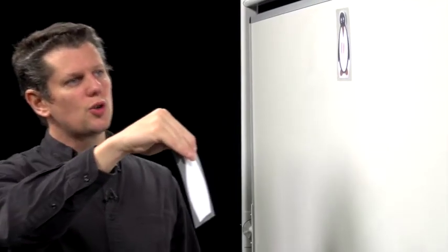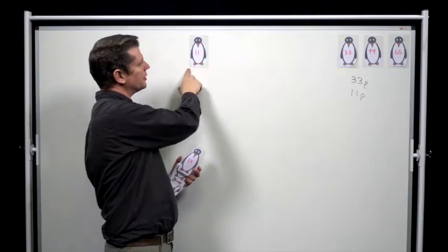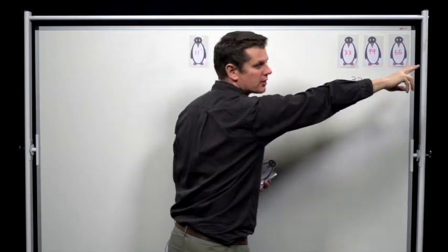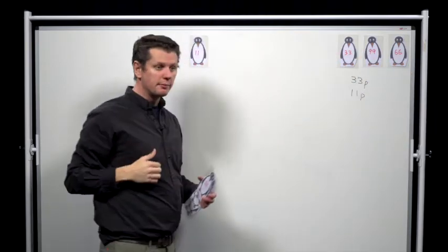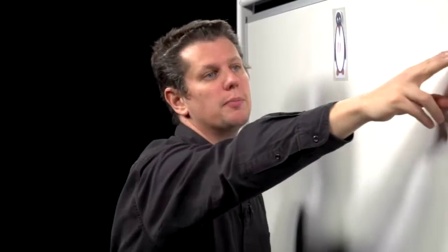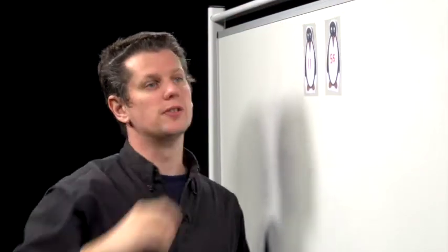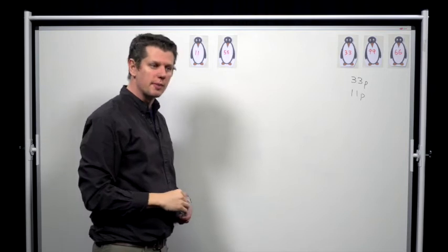The first penguin to join behind penguin 11 was penguin 22. But penguin 22 is somewhere over here, because they joined before penguin 33. The first penguin to join behind penguin 11, but after penguin 33, is penguin 55. So once penguin 55 joins the queue, they're immediately in front of penguin 33.